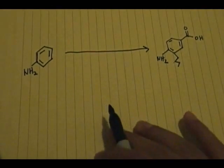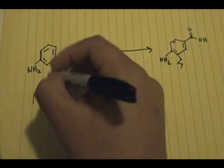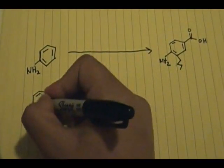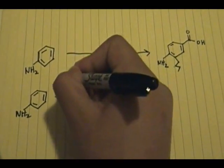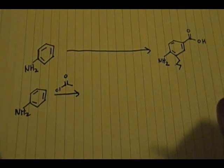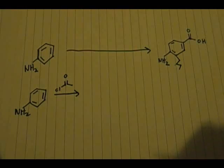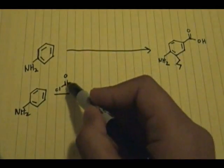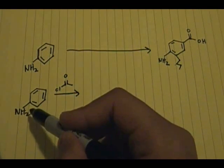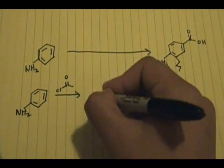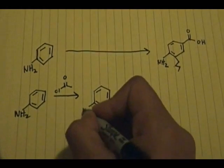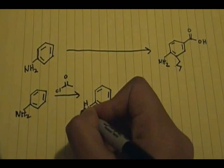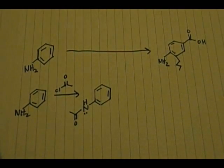The first thing I did was Friedel-Crafts acylation on the NH2 group itself. Some of you might say you can't do that — and yes, if you have an NH2, NO2, or strong electron-withdrawing group you normally can't do Friedel-Crafts alkylation or acylation on the ring. However, you can acylate the NH2 group to form an amide. The product of this step has the nitrogen with one H, lone pairs, and an acyl group — forming an amide.